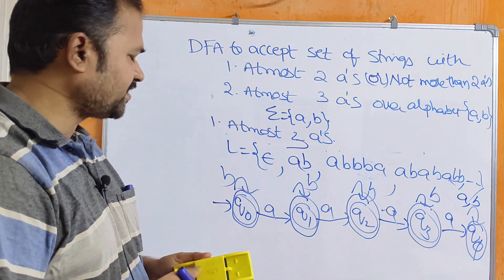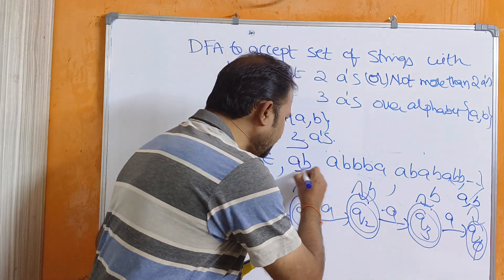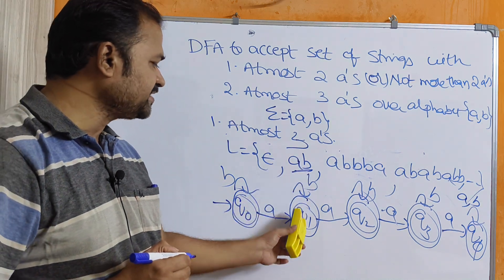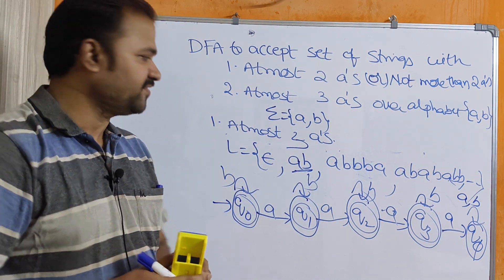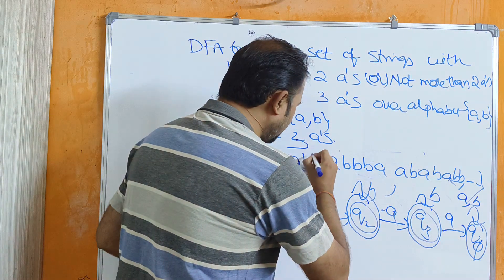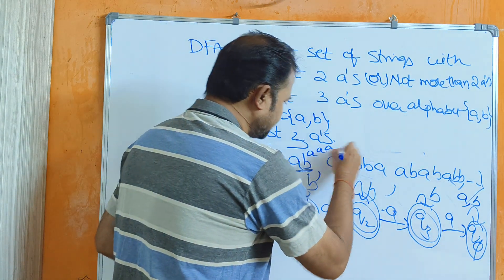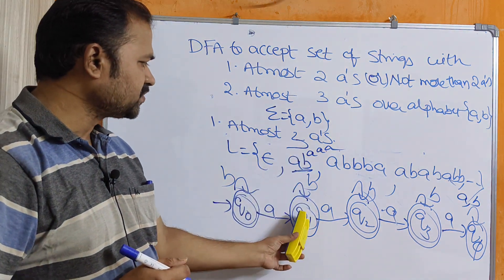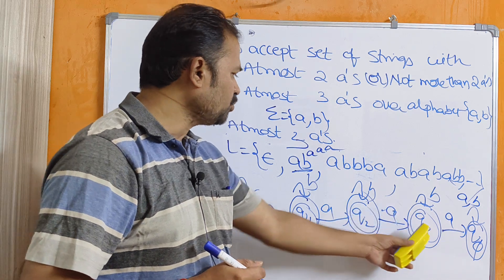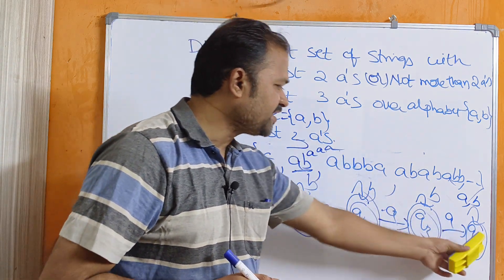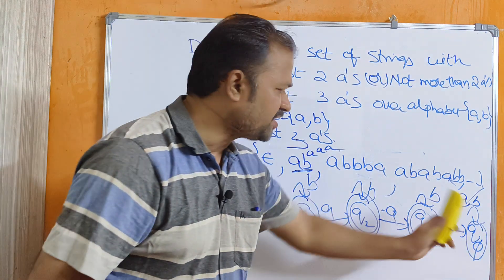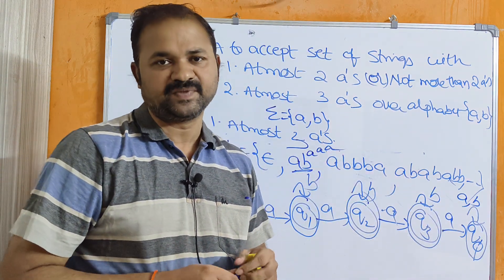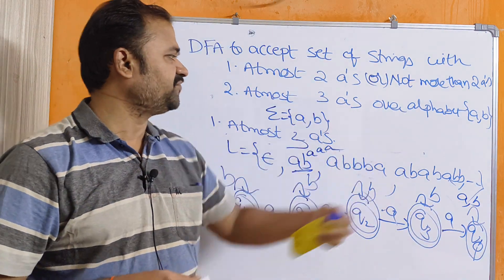Let us verify the DFA. For the string AB: Q0 on A goes to Q1, Q1 on B stays at Q1 — this is a valid final state. Next, consider a string with 4 A's, like ABAA A: Q0 on A to Q1, Q1 on B stays Q1, Q1 on A to Q2, Q2 on A to Q3, Q3 on A goes to Q-pi — dead state, not a final state. Any further A's or B's keep us in dead state. This is the complete DFA for at most 3 A's.